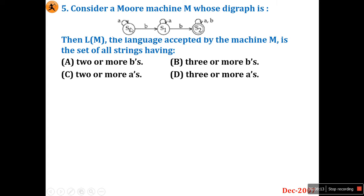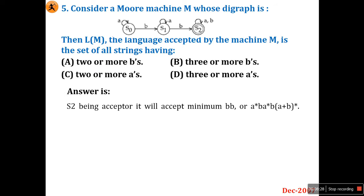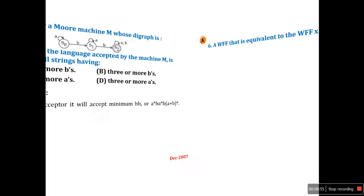To reach S1 to S2, it must read b at least once more. So to go from S0 to S2, it necessarily reads two b's. After reaching S2, it may read a or b any number of times. Therefore the conclusion is two or more b's — option A is the right answer. S2 being the acceptor state accepts minimum 'bb', or patterns like a*ba*b(a+b)*.